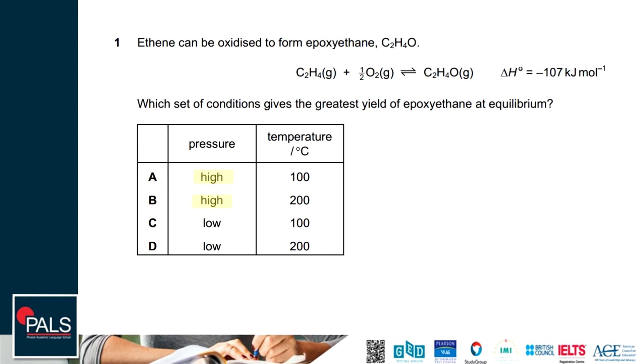What about temperature? Temperature depends on the energy. As we can see, the energy is negative, meaning this is an exothermic reaction. If we use high energy it will favor the endothermic, but lower energy will favor the exothermic. In order to have the greatest yield of epoxyethane we need lower temperature. Therefore the correct answer is A.